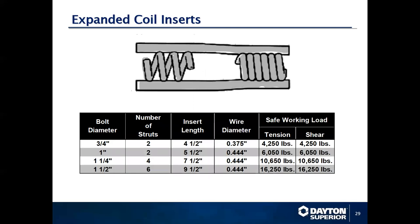One of the more common inserts is the expanded coil insert, the F56 product. This product has been used regularly in the construction market for concrete anchors — from form attachment to jump systems to any other anchorage within concrete where a strong anchor is needed. You are talking approximately 10,600 pounds for the inch-and-a-quarter diameter, and about 4,200 pounds for the three-quarter inch.